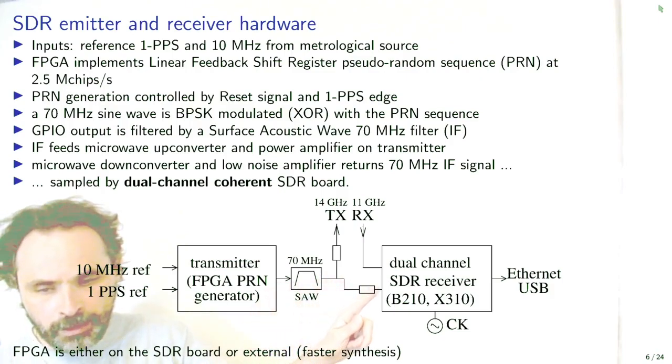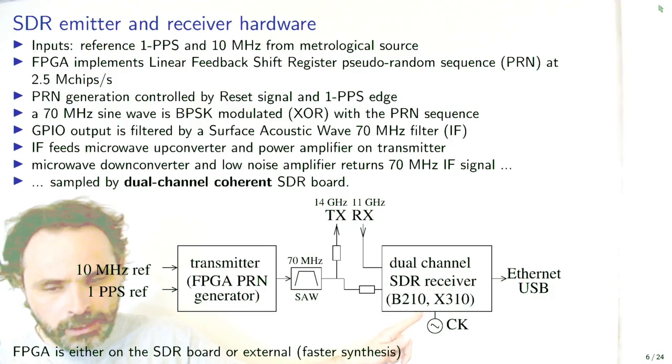The architecture that we consider is the input from the metrological source, the 1 PPS and 10 MHz metrological source. A field programmable gate array will generate with high timing reproducibility the pseudorandom sequence generation, as well as the 70 MHz binary phase shift keying intermediate frequency that will be filtered using a surface acoustic wave bandpass filter to only keep the fundamental mode and get rid of the harmonics.